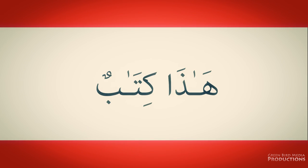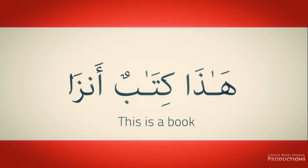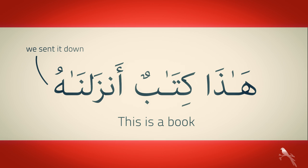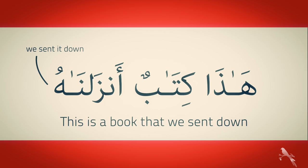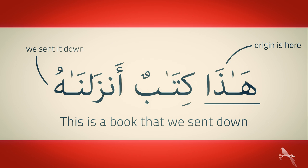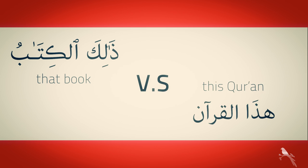Subhanallah. And then, in one instance, Allah says: هَذَا كِتَابٌ — 'This is a book.' So you say, aha, the theory is broken, because now 'book' is being used with what word? 'This.' Close. But he adds: هَذَا كِتَابٌ أَنزَلْنَاهُ — 'This is a book that we sent it down.' So even when he used 'this,' he added that it didn't come from here, it's from there. Because the implied meaning when you say 'this' is that the origin is here. So Allah Azzawajal prevents that possible thought from even occurring by saying 'that book' versus 'this Quran' — هذا القرآن. We don't see 'that Quran'; we see 'this Quran' in the books. Subhanallah.